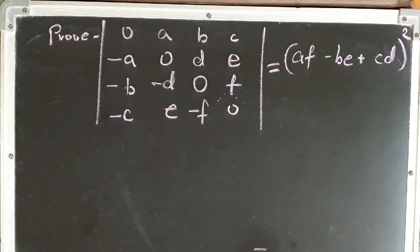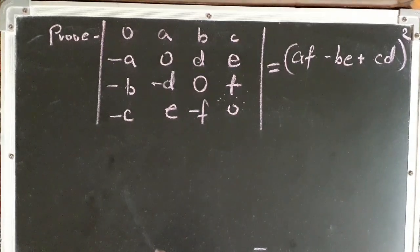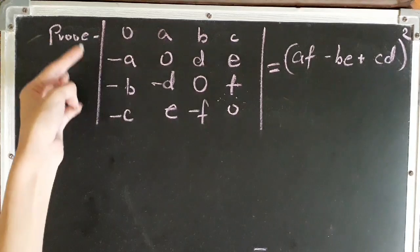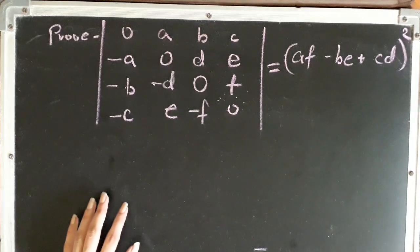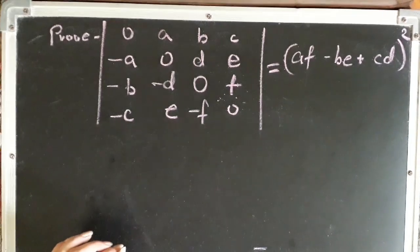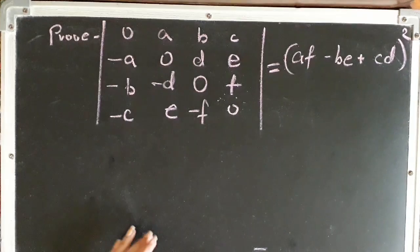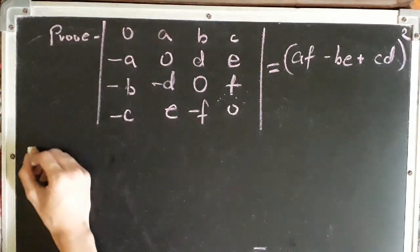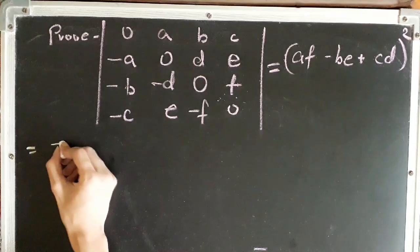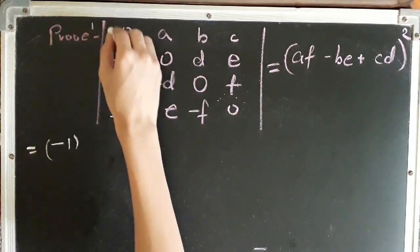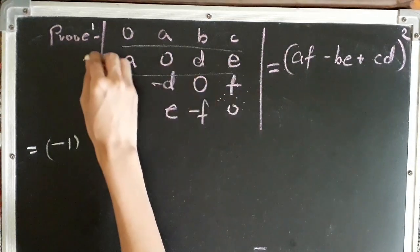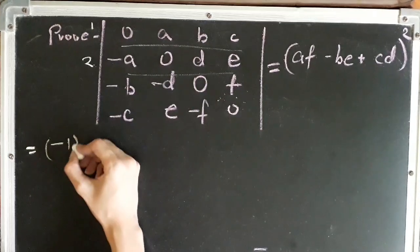By the Laplace expansion, the first thing we need to do is choose any two rows which are going to remain constant throughout. We can choose the first and second row, the first and third row, or the second and fourth row — whatever our choice. I will be choosing row number 1 and row number 2.